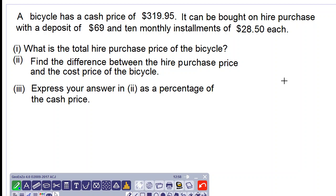Good day everyone. We are doing another hire purchase question. The bicycle has a cash price of $319.95. It can be bought on hire purchase with a deposit of $69 and 10 monthly installments of $28.50 each.